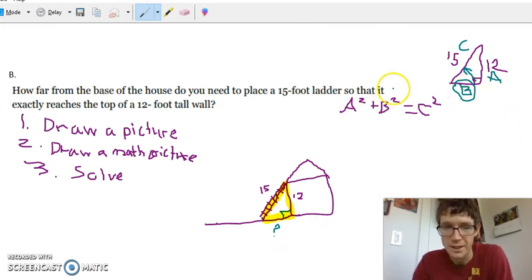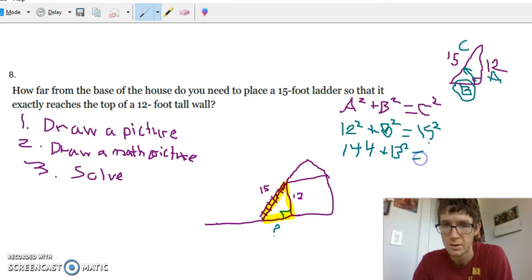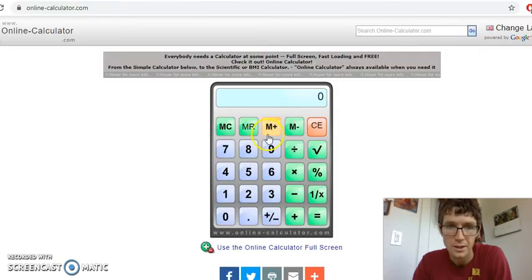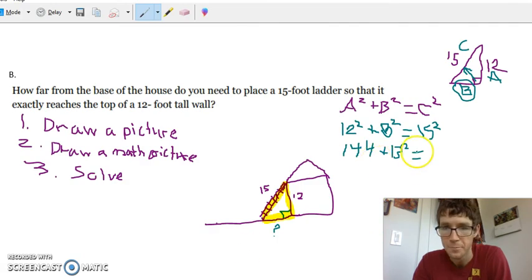All right so let's see we got a squared plus b squared equals c squared. So our a squared is 12 squared plus our b squared is, well we don't know what b is so I'm just going to put b squared equals 15 squared. So if you don't know what 15 squared is, well firstly 12 squared is 12 times 12 that's 144 plus b squared. And what is 15 squared? Let's pull out our calculator. What is 15 times 15? All right we got 225.